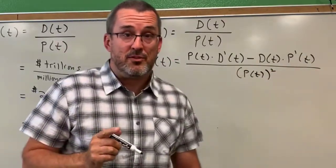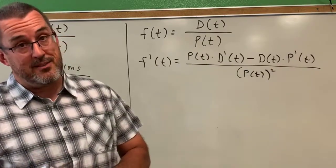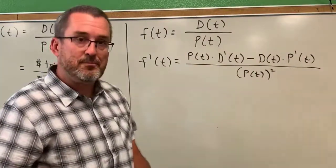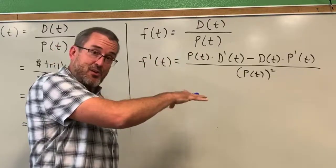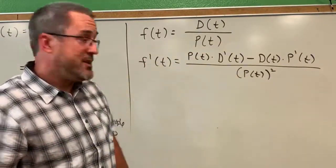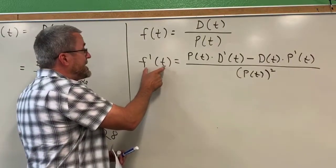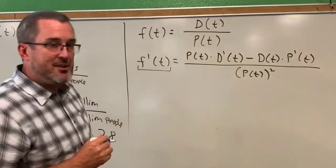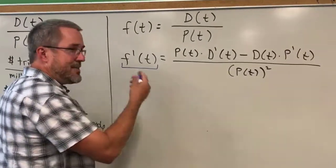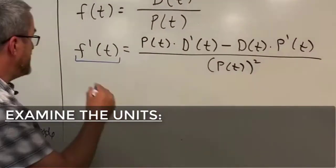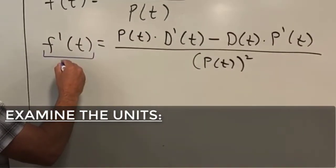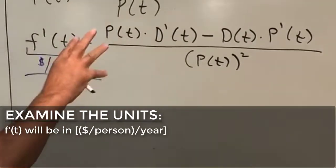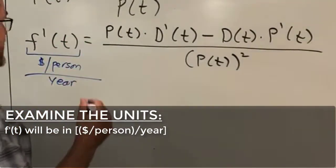If you haven't watched the quotient rule video, you might be wondering what that's all about — you need to go watch the video, because there's a good reason why all of that has to happen in the context of the quotient rule. Not only does it make sense in that video, but we can also make sense of it here in terms of the units. This is the rate at which the amount of money per person is changing per year, so we would expect the units to be dollars per person per year.